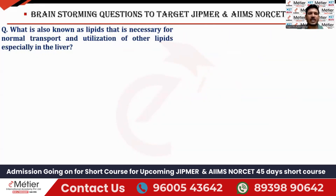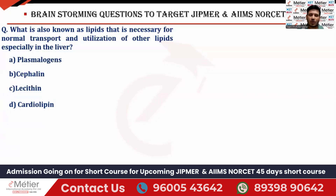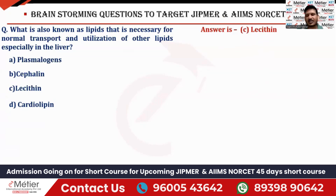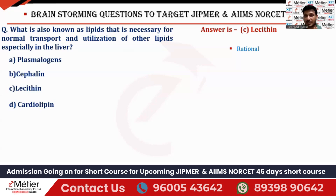The fourth question asks: what lipid is necessary for the normal transport and utilization of other lipids, especially in the liver? The options are plasma low-density lipoproteins, cephalin, lecithin, and cardiolipin. The right answer is option C — lecithin. Lecithin is also called phosphatidylcholine. It is a surface-active agent and is used for emulsification of fat, especially in the brain, nervous tissues, and sperms.